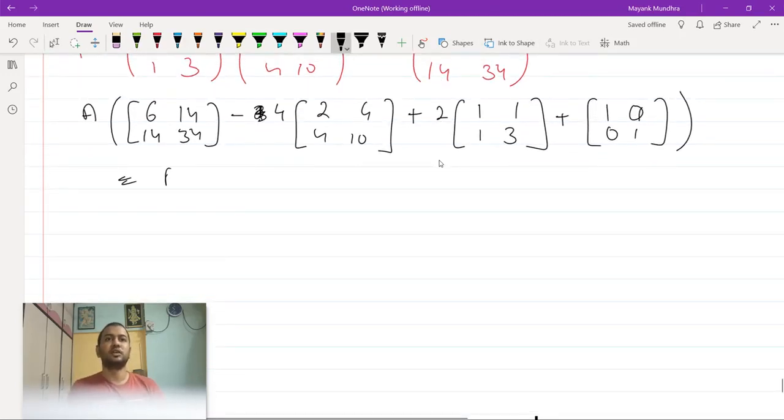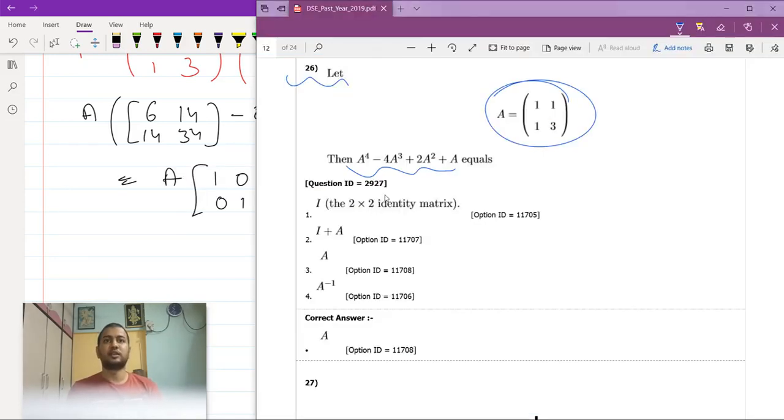So when you do the calculations you will see that the final answer would be A times of [[1,0],[0,1]] which is basically your A. So that's your final answer A.